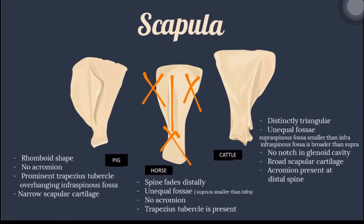In cattle, it is distinctly triangular with unequal fossa. The supraspinous fossa is smaller than the infraspinous fossa, and the infraspinous fossa is broader than the supraspinous fossa. It has no notch in the glenoid cavity, a broad scapular cartilage, and the acromion is present at the distal spine.